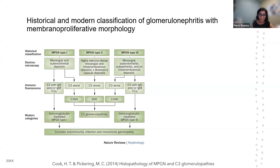Overall, the big triggers of C3 are autoimmunity, infection, and monoclonal glomerulopathy. So anytime you have a diagnosis of C3 glomerulopathy, you have to make sure that you rule out all of those things.